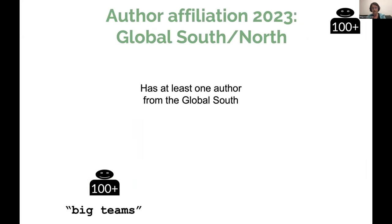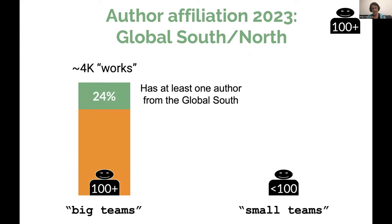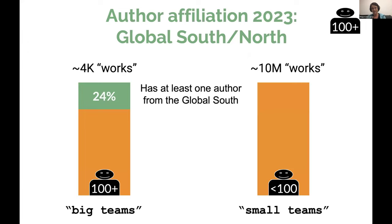Looking at author affiliations, using a simple divide between global south and north, for the big team subset from 2023 we find 24% of works have at least one author from global south countries. In comparison, smaller teams — less than 100 authors — show 27% of works with at least one global south author. So both are very similar proportions.